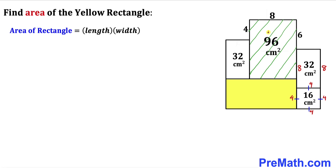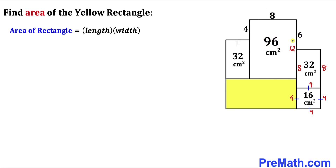Now let's focus on this shaded rectangle whose area is 96 and its width is 8, so therefore its length has got to be 12, because 12 times 8 gives us 96. Once again, since we are dealing with this rectangle, this side length has got to be equal to the opposite side length — if this side length is 12 then that side length has got to be 12 as well.